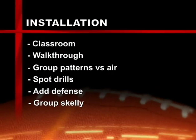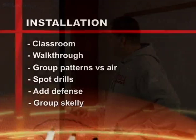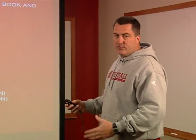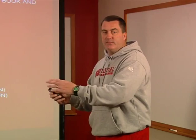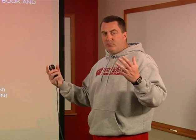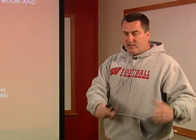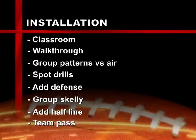Then we add all components and do a group skelly — offense versus defense with no pass rush. Great chance to get a picture of how it fits against various defenses, and for receivers to find out if it's zone where the hole is, if it's man-to-man when to run, and what depth they need. Then we add a half line — right tackle and right guard going versus left defensive end and left tackle. Now you're creating some semblance of rush and timing. The quarterback has a little more distraction without all the problems of a full team pass and potential injuries. Then we go 11-on-11 team pass, mixing in blitz situations.